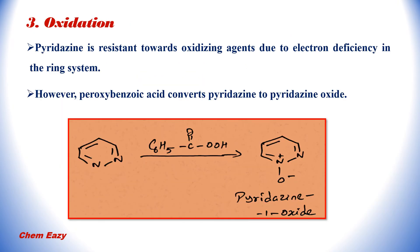In the case of oxidation, pyridazine is resistant towards oxidizing agents due to electron deficiency in the ring system. But peroxybenzoic acid converts pyridazine to pyridazine oxide. As shown in this reaction, pyridazine with peroxybenzoic acid is converted to pyridazine 1-oxide.